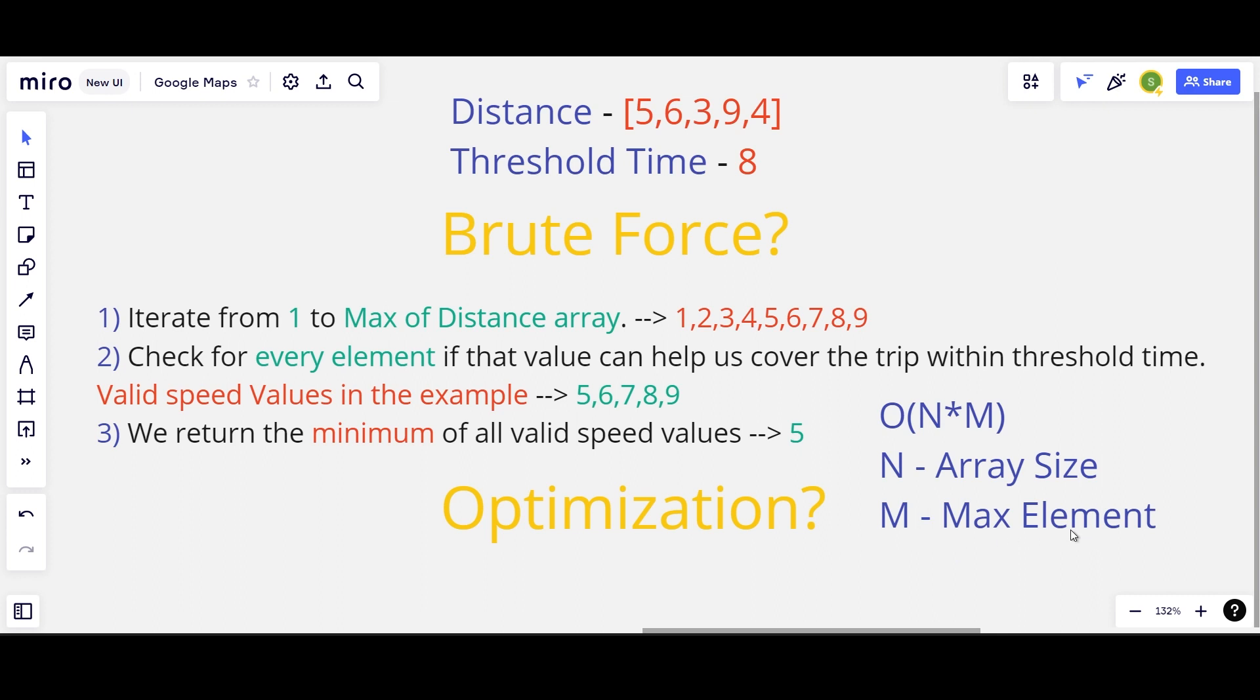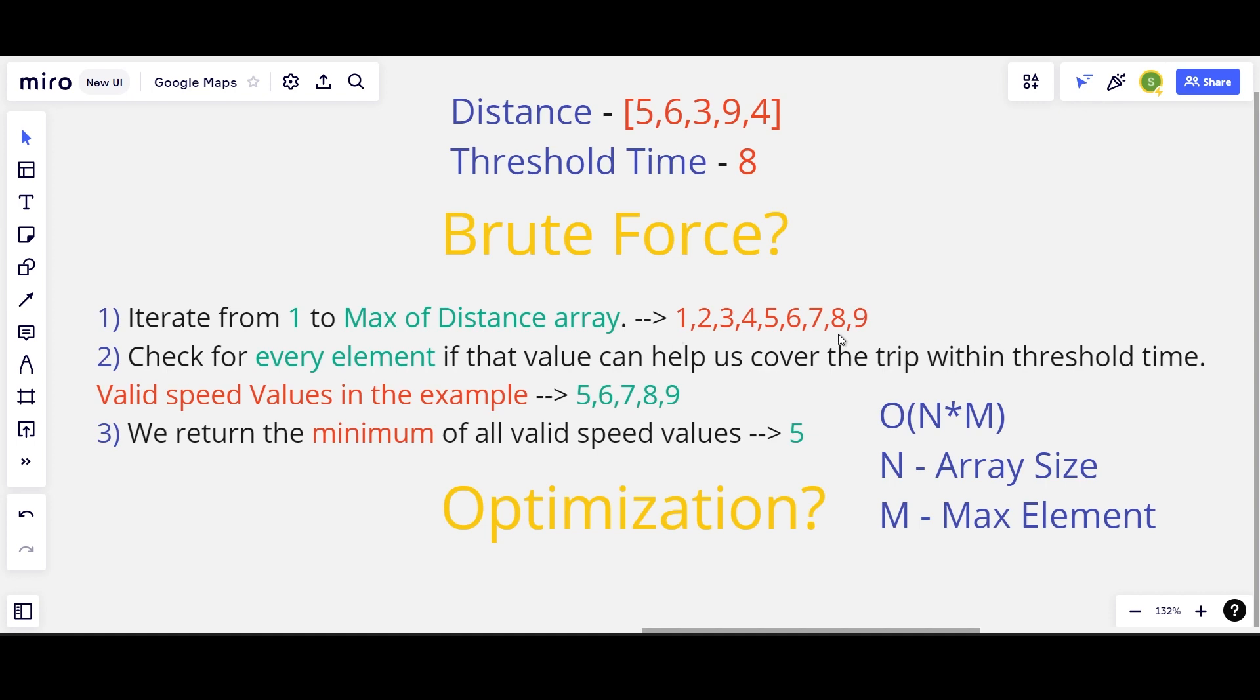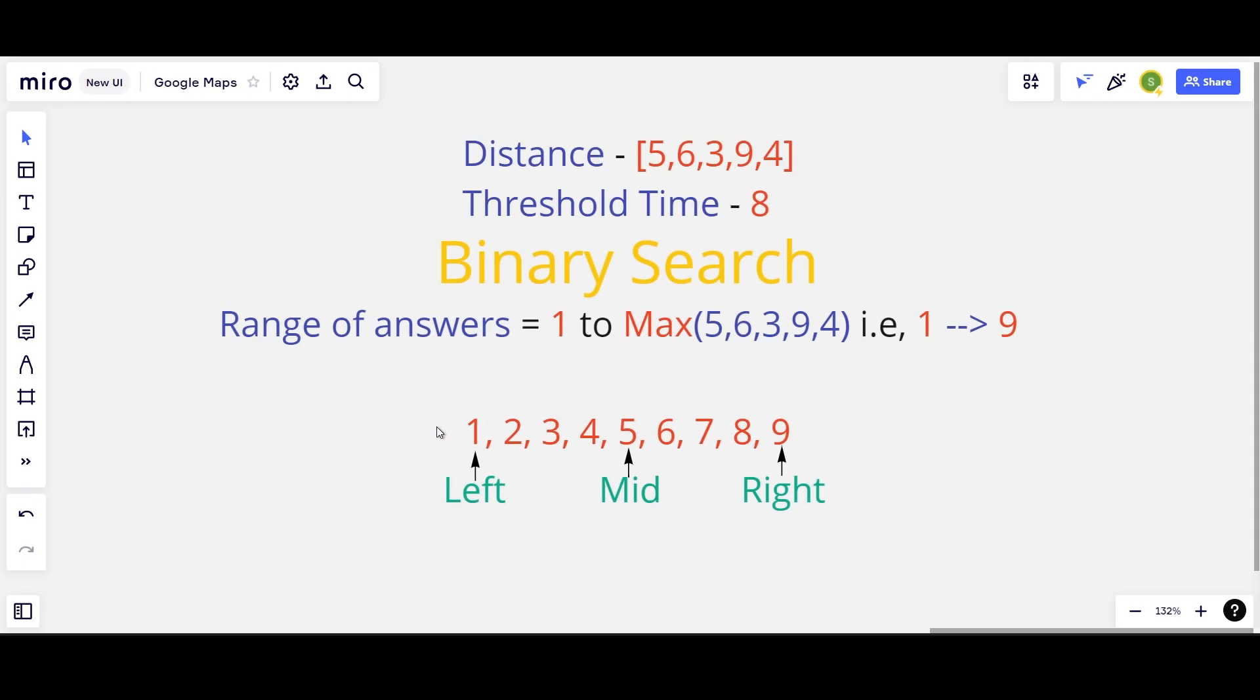Now the question is can we optimize this? Yes definitely. Since now we have a range of possible answers we can apply binary search. We can run a binary search on the range of 1 to 9. Mid is my possible speed. If mid is valid we assign it to answer and look for better results in the left part of the range. If it is not valid we look for possible bigger valid speed in the right half of the range.